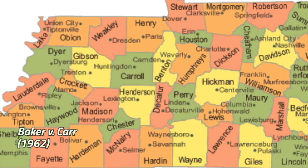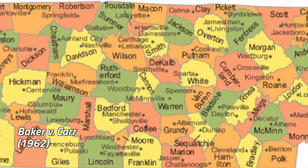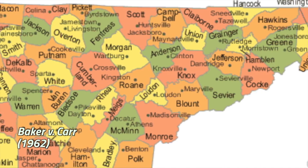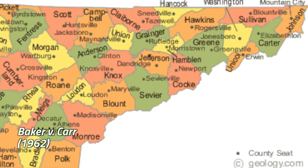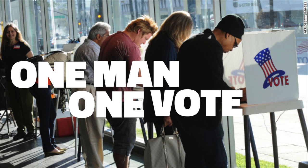Lastly, Baker v. Carr ensured that voters would be represented equally. Before, districts could be redistricted so certain votes counted more. This one-man, one-vote principle was supported by the 14th Amendment of Equal Protection.